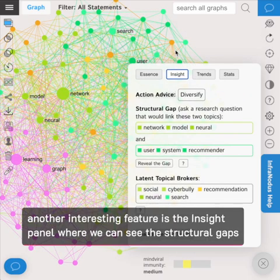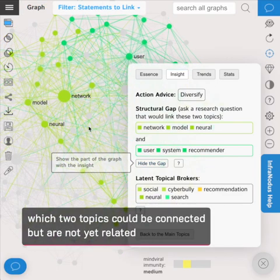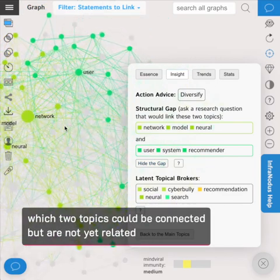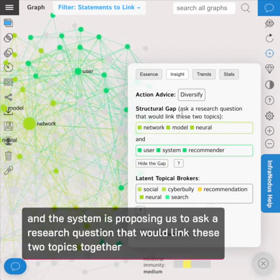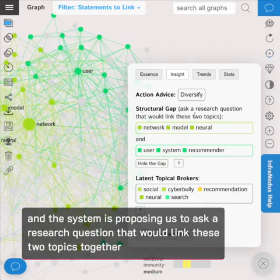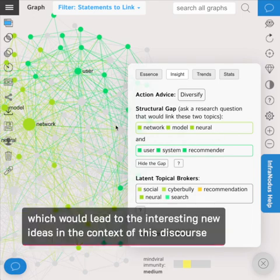Another interesting feature is the insight panel where we can see the structural gap. So which two topics could be connected but are not yet related. And the system is proposing us to ask a research question that would link these two topics together, which normally leads to very interesting and new ideas in the context of this discourse.